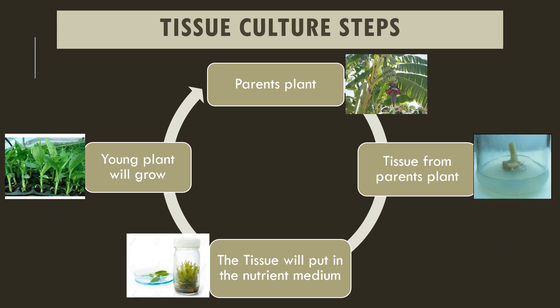Looking at another tissue culture diagram: from the parent plant, we take the tissue, then transfer it into the nutrient medium. The tissue will grow into a young plant, and after that, we transfer it into soil to make it a parent plant.